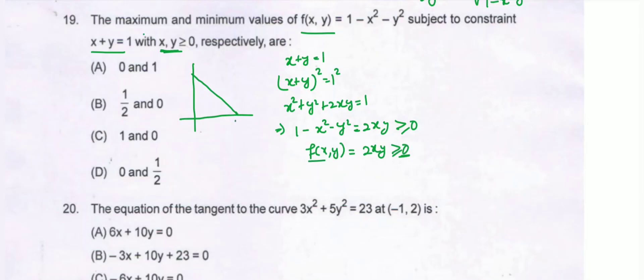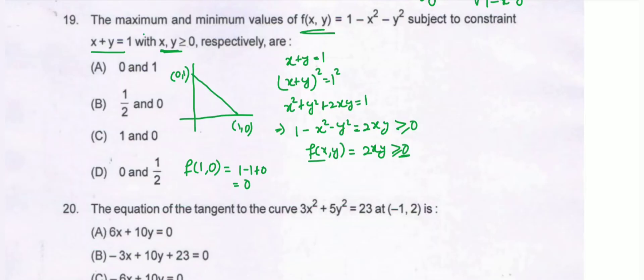Checking the boundary points: at (1,0), f(1,0) = 1-1-0 = 0; and at (0,1), f(0,1) = 0 as well. So the minimum value of f(x,y) is 0.